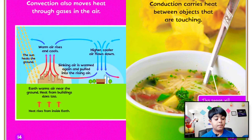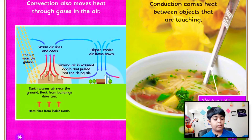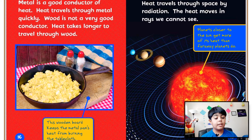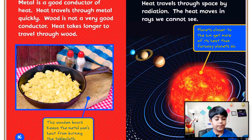As you can see in the picture, a spoon will become hot after sitting in a bowl of hot soup for a few minutes. Like if you touch something hot, your finger or hand might become hot too. Metal is a good conductor of heat — heat travels through metal quickly. Wood is not a very good conductor; heat takes a long time to travel through wood.